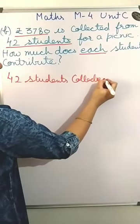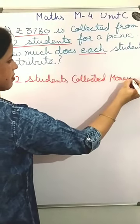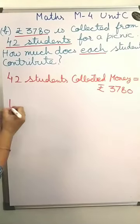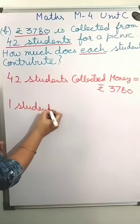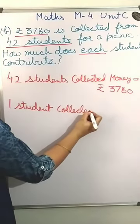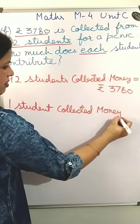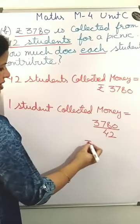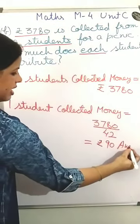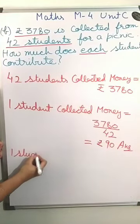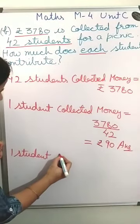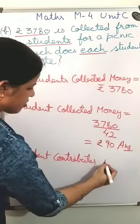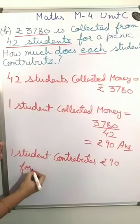1 student collected money is equal to rupees 3780 divided by 42. Now divide this one. The answer is 90. So one student contributes rupees 90 for a picnic.